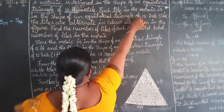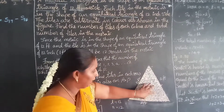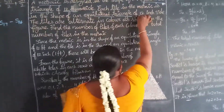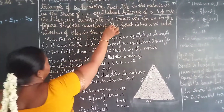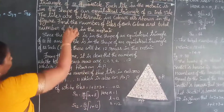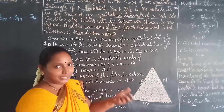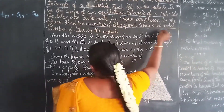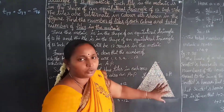The mosaic is in the shape of an equilateral triangle with all three sides equal to 12 feet. Inside that triangle, each tile is also an equilateral triangle with each side of 12 inches, which is 1 foot. The tiles alternate in colour — white and blue. We need to find how many blue tiles and white tiles are in the triangle, and how many smaller triangles in total.